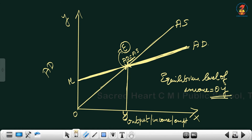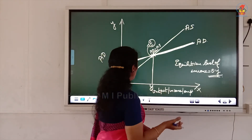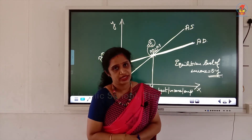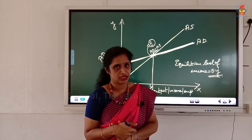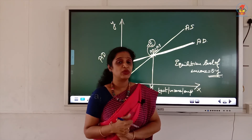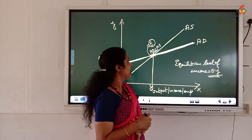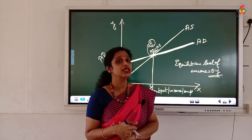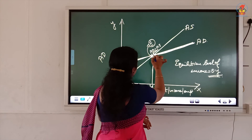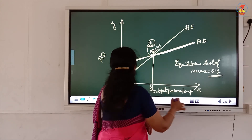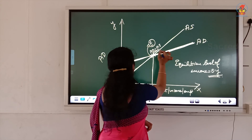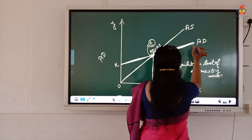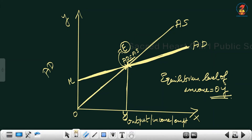Any disturbance in aggregate demand or aggregate supply can shift the income level from OY either to the left or to the right — that will be covered in the next classes. Keynes thus proved that equilibrium occurs when AD equals AS, at point E where the AD curve intersects the AS curve, and OY is the equilibrium level of income.